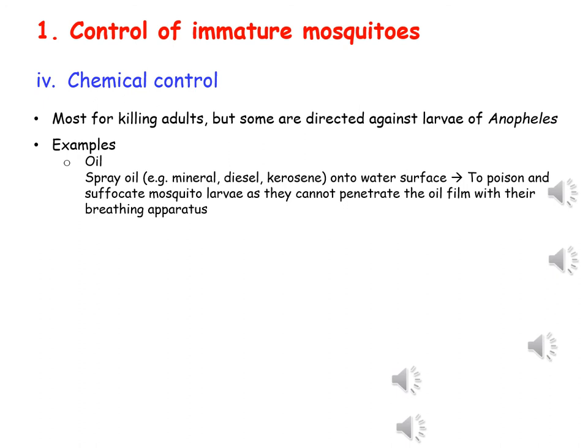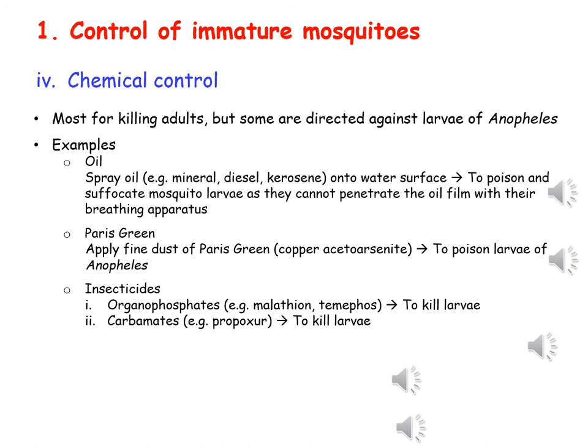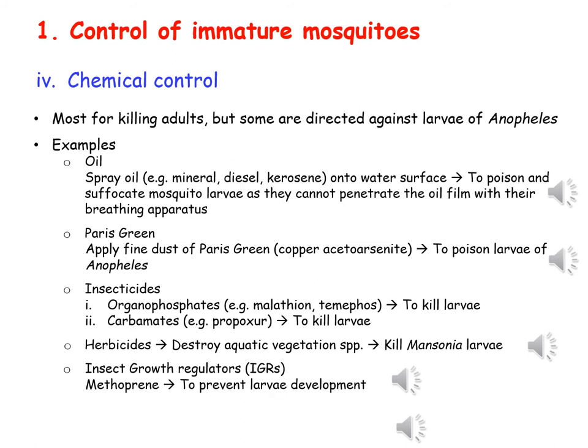Chemical control methods for immature mosquitoes include spraying oil onto the water surface to poison or suffocate the larvae. We can also spray Paris green and arsenic powder, as well as insecticides such as malathion or carbamates into the water to poison the larvae or Anopheles. In the case of Mansonia, which inhabits certain types of aquatic plants, we can destroy those plants to prevent larval growth. We can also place insect growth regulator hormones to prevent further larval development. Overall, integrated control combining different methods has become a more feasible trend, as this approach enhances the effectiveness of mosquito control.